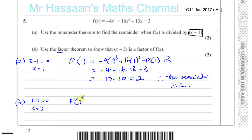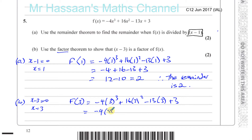So we have f(3) is minus 4 times 3 cubed plus 16 times 3 squared minus 13 times 3 plus 3, which gives you minus 4 times 27, plus 16 times 9, minus 13 times 3, which is 39, plus 3.